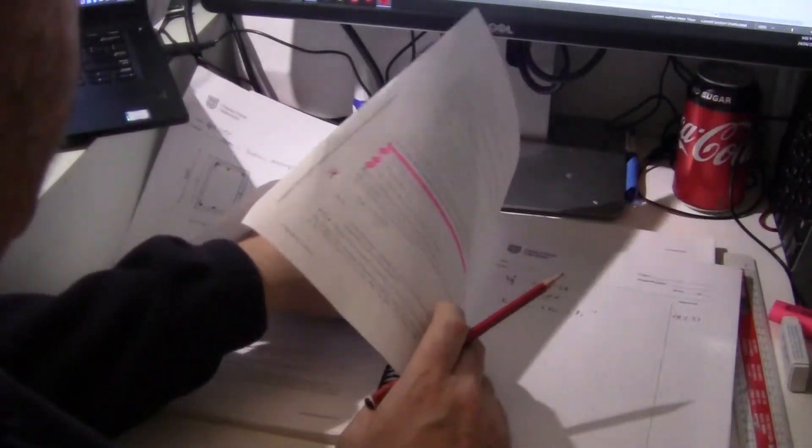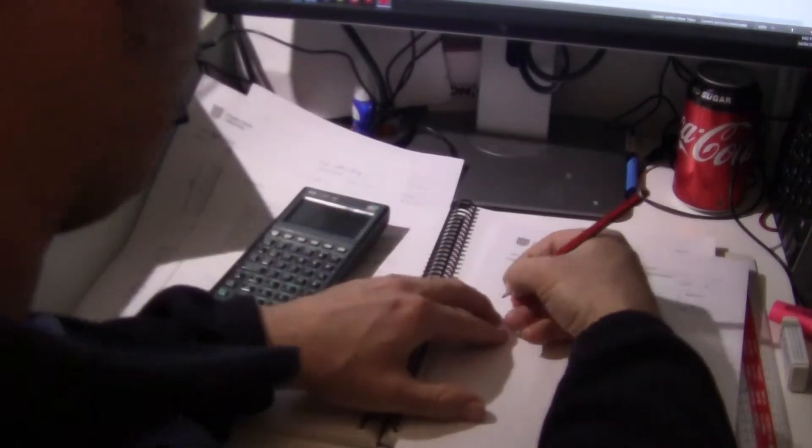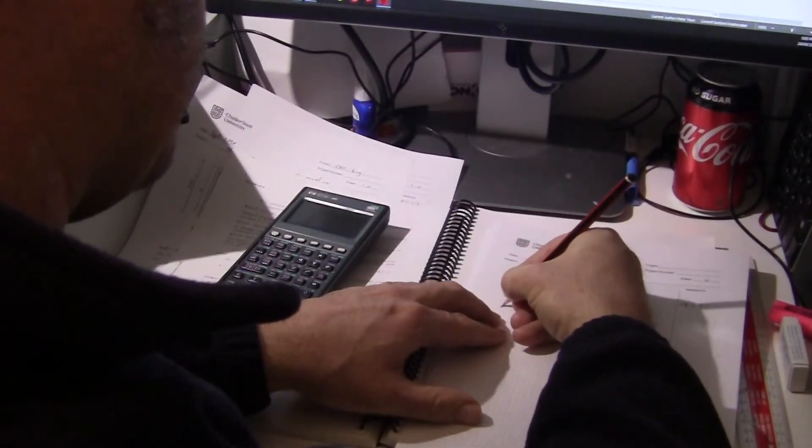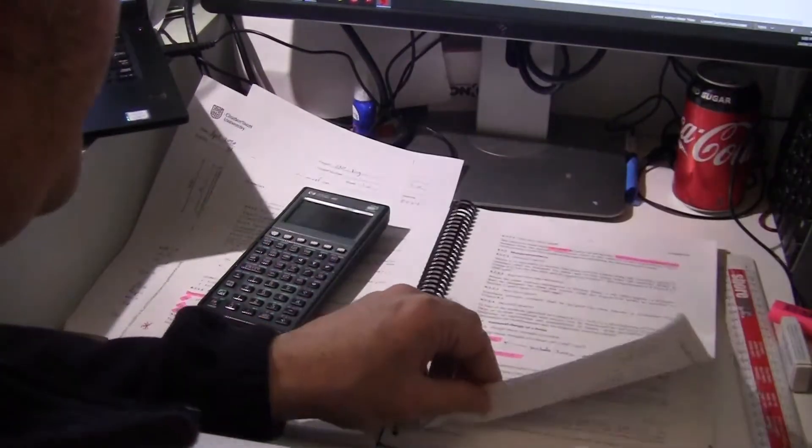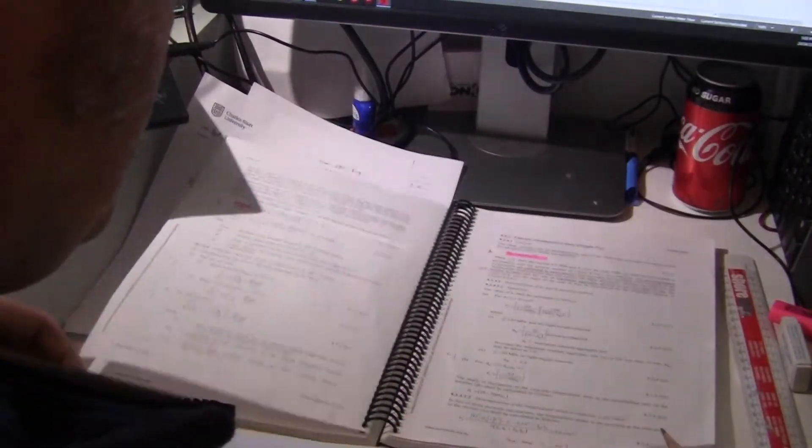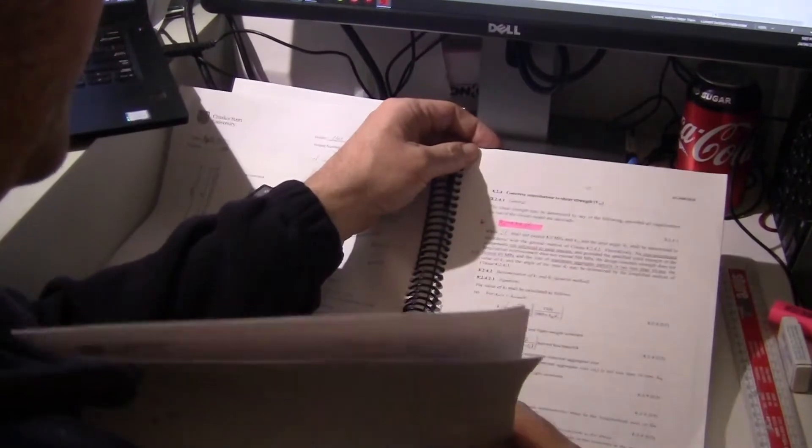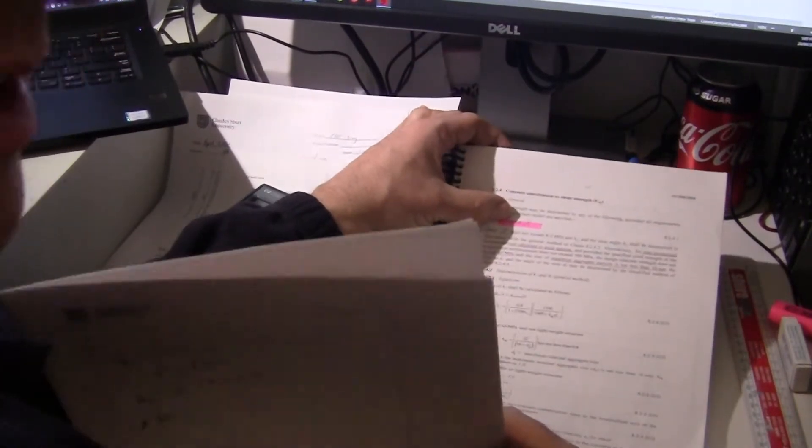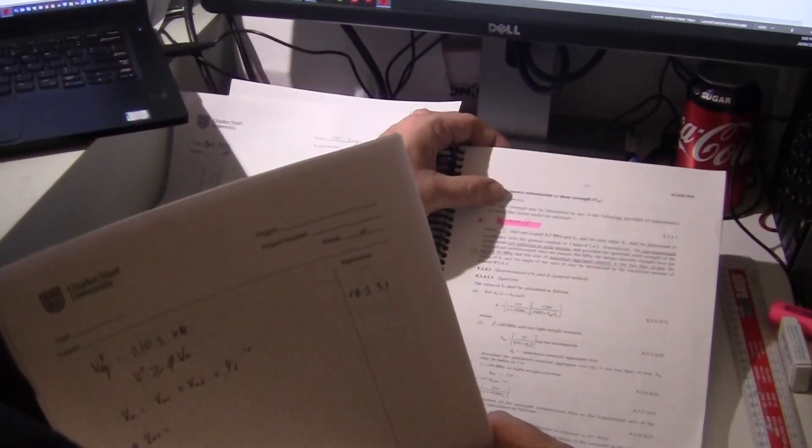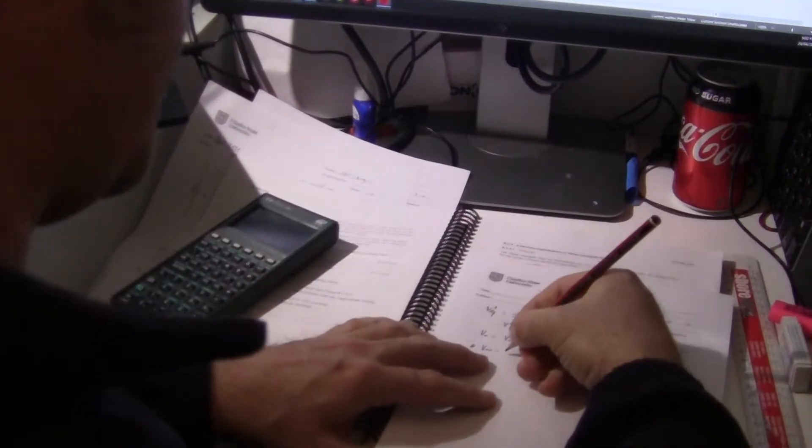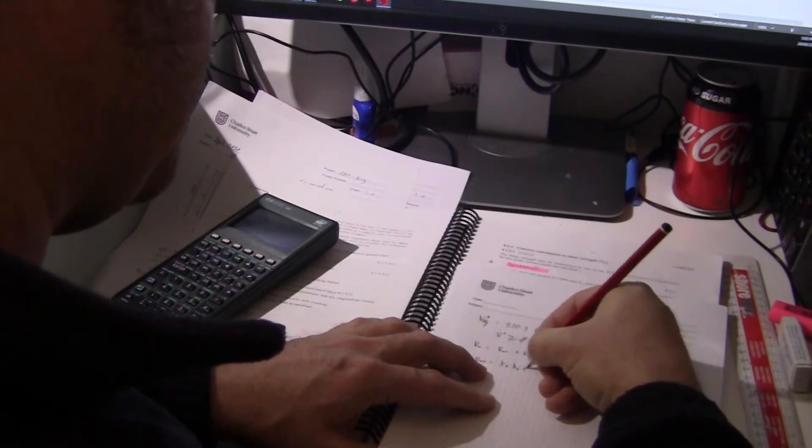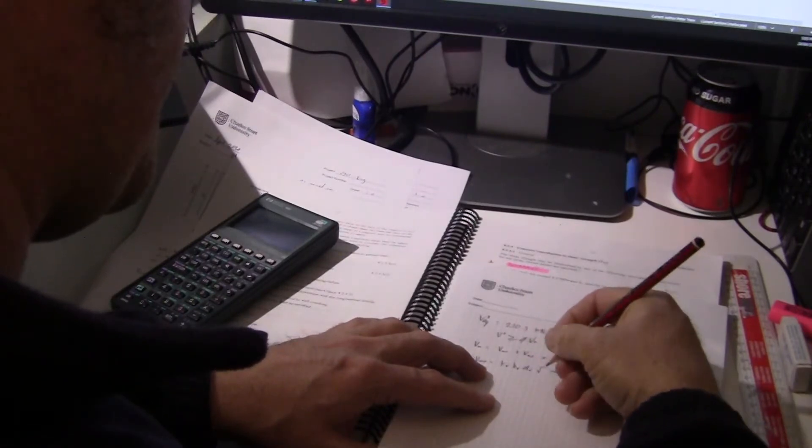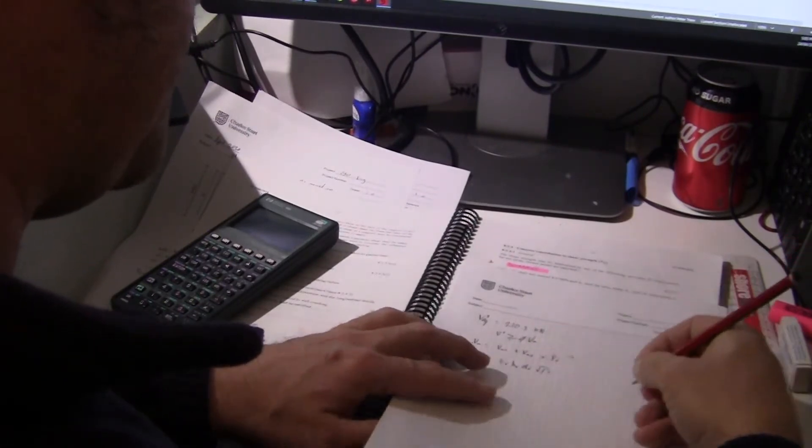Let's first go to V UC. V UC equals K V times B V times D V times the square root of F dash C. K V times B V times D V times the square root of F dash C, and that is clause 8.2.4.1.